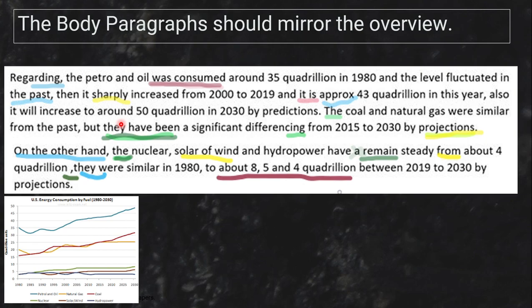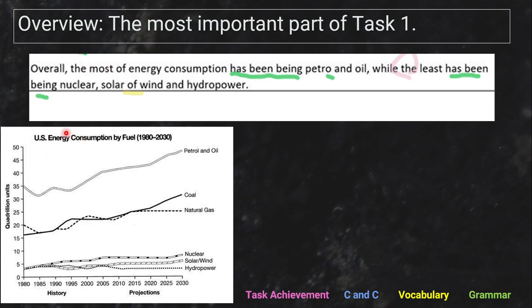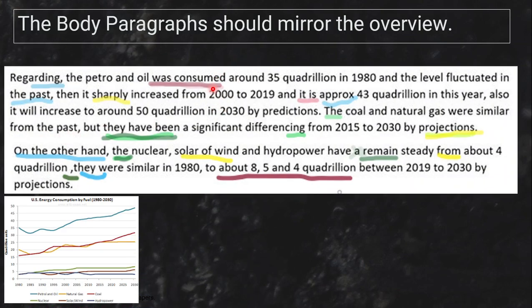Her body paragraph starts with 'Regarding' — you can't use 'regarding' by itself to start a sentence. Then: 'Petro and oil was consumed around 35 quadrillion.' No — you need to recognize it's not petrol and oil being consumed in the chart; it's energy. The petrol and oil is used to make the energy. Then she says it 'sharply increased' from 2000 to 2019 — but looking at the graph, that's not sharply increasing; it's gradually increasing. So the description is not accurate.